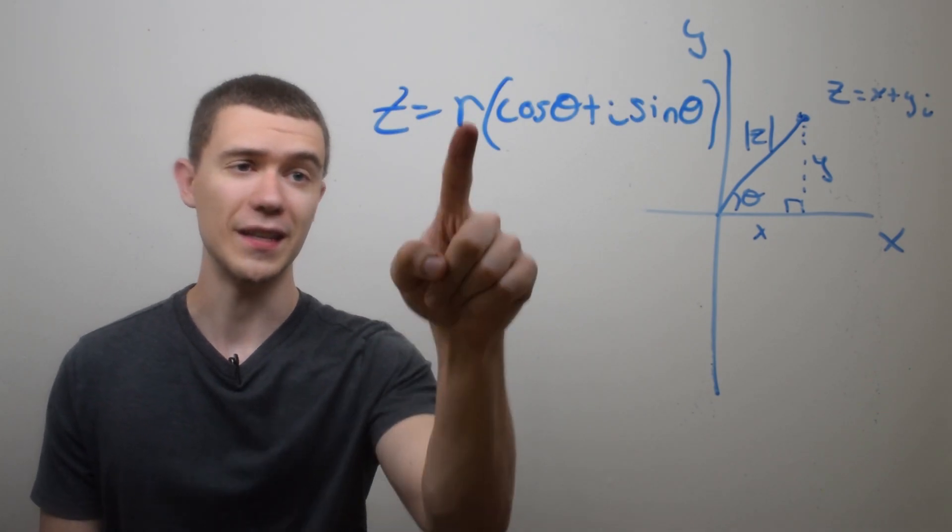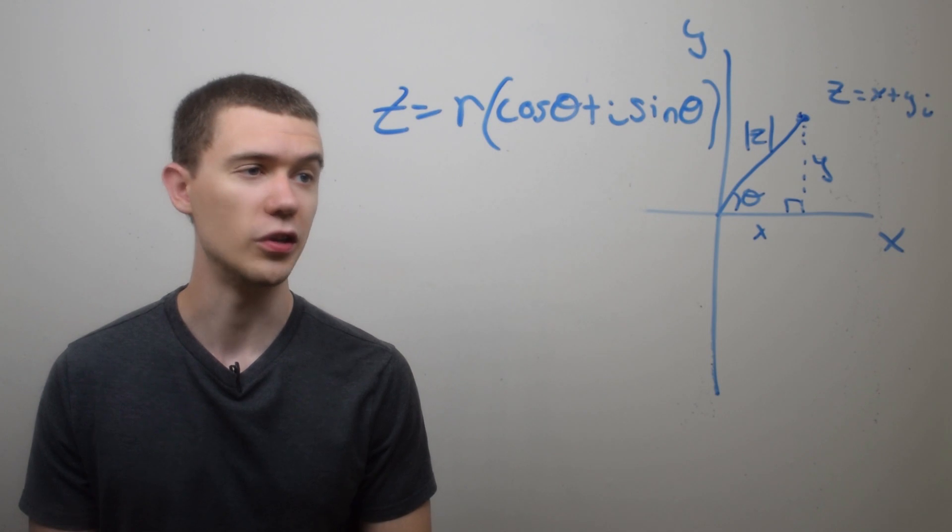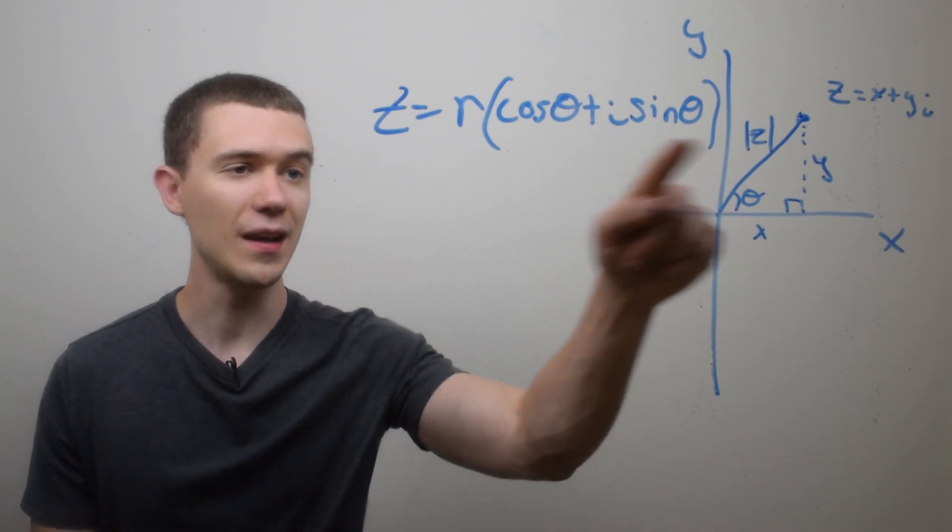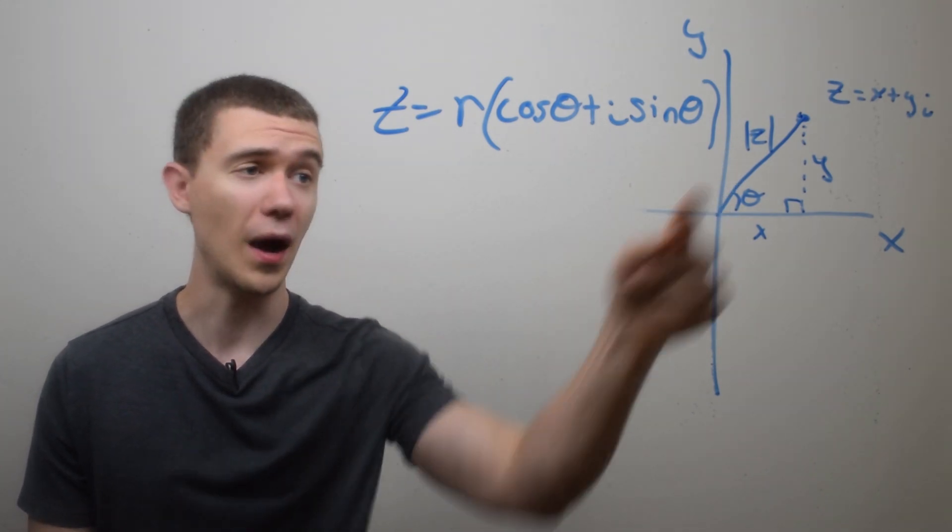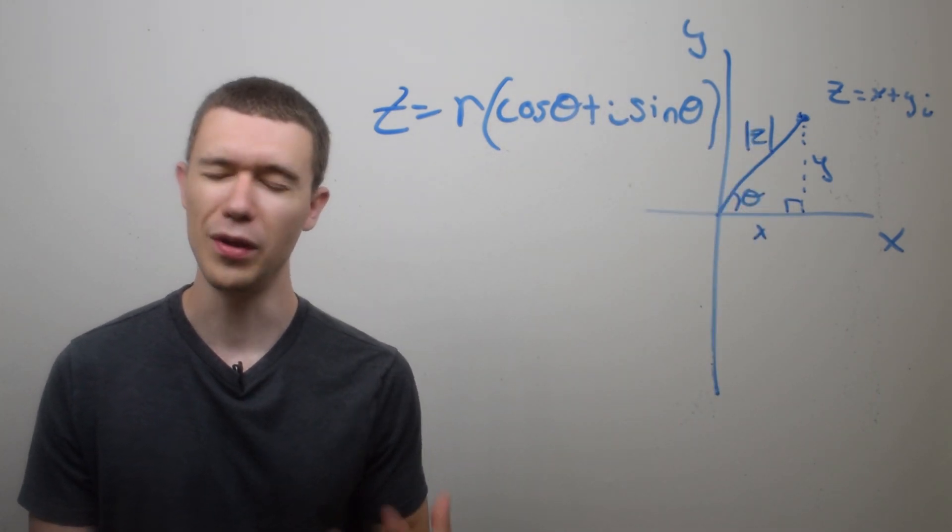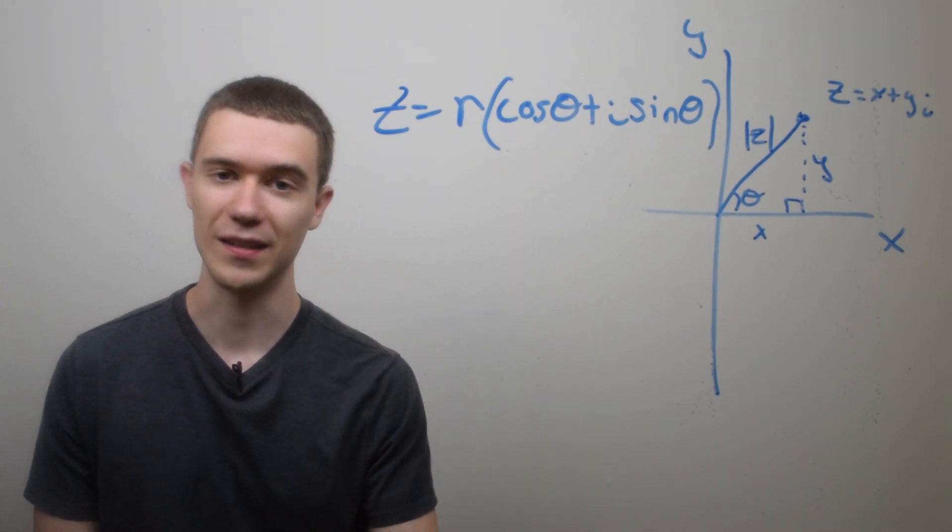What you may notice about this is r is unique. There is only one distance to the origin of any complex number. However, this angle theta may not be unique. In fact, if we take theta plus a multiple of 2 pi, one full revolution around the unit circle, well, then we'll be back in the same spot. So this angle is not necessarily unique.